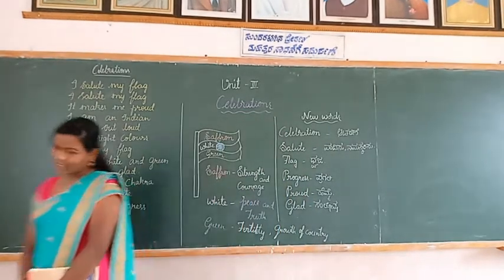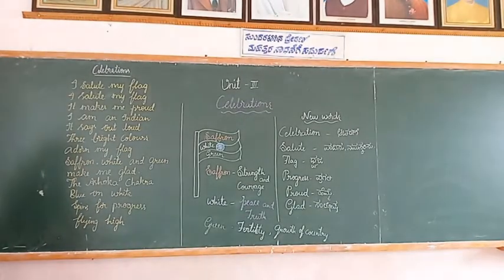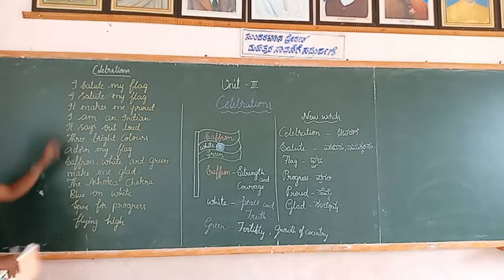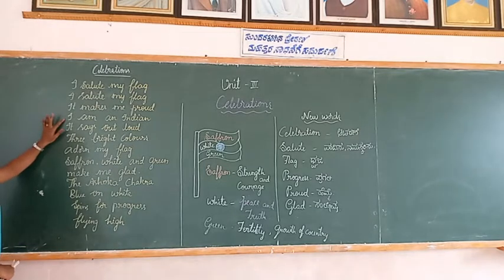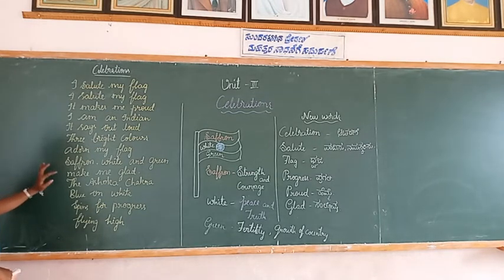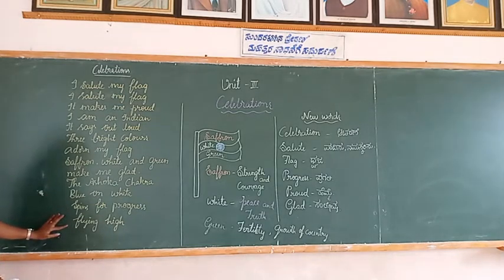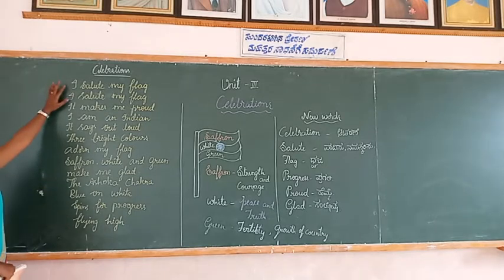Once again, I read the poem and you repeat after me. 'I salute my flag. It makes me proud. I am an Indian, it says out loud. Three bright colors adorn my flag — saffron, white and green — make me glad. The Ashokan Chakra on white, spins for progress, flying high.'